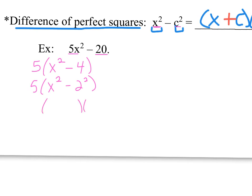That would split apart into x and x. The 2 squared would be 2 and 2. And then we just have to remember one of them is plus and one of them is minus. Also, don't forget about that common factor out in front, that 5. That's the factored form for 5x squared minus 20.